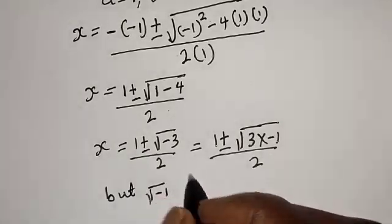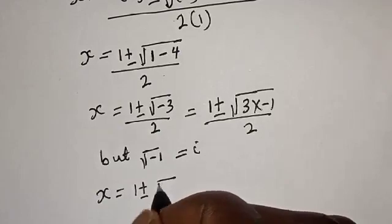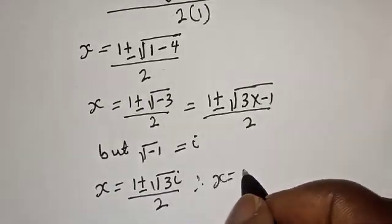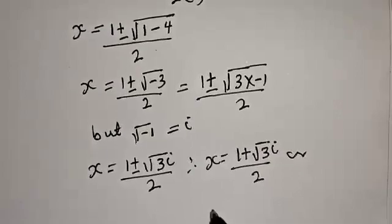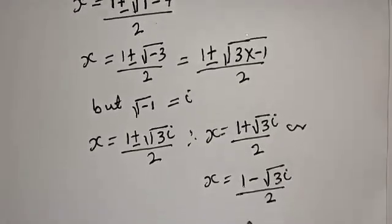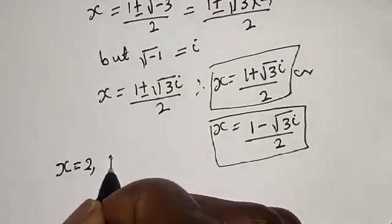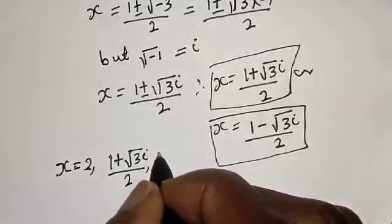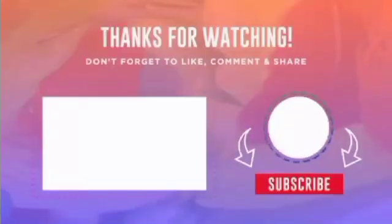Since square root of minus 1 equals i, we get s equals 1 plus or minus root 3 times i, over 2. Therefore s equals 1 plus root 3i over 2, or s equals 1 minus root 3i over 2. Our final answers are: s equals 2, s equals 1 plus root 3i over 2, and s equals 1 minus root 3i over 2. If you enjoyed the class, please don't forget to like, share, comment and subscribe.